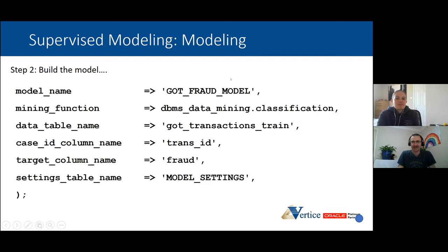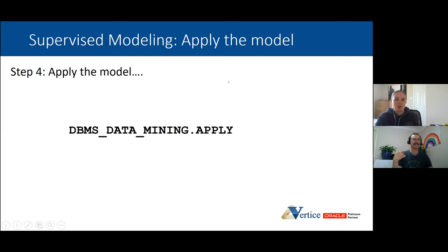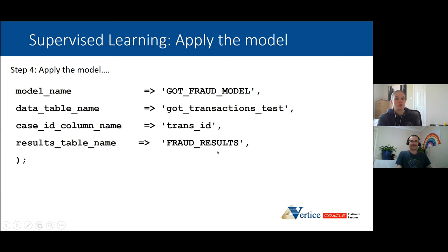Press go and the model is off training. Then we need to apply the model to the test data set. The database has another function: DBMS_DATAMINING.APPLY, to apply the model to the test table. We tell it the model name, the table to apply it to, which column is unique, and ask it to put the results into a fraud_results table. Dead easy. Now it's time to figure out how much better the machine learning approach did. The error rate is 3% — compared to Chris's 1%.